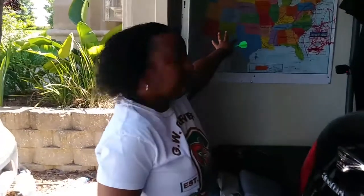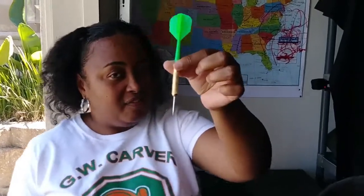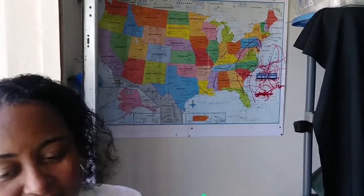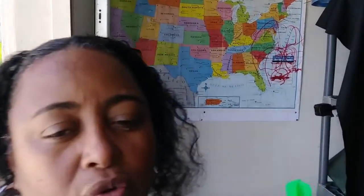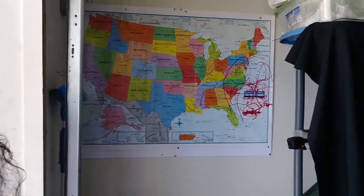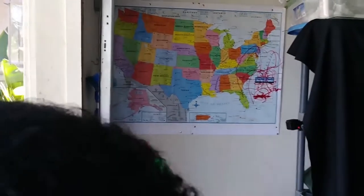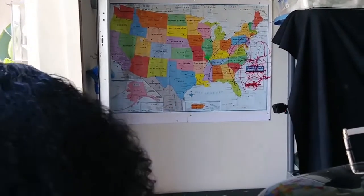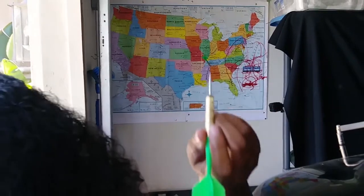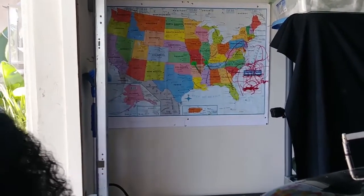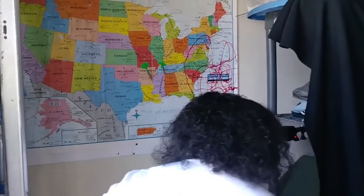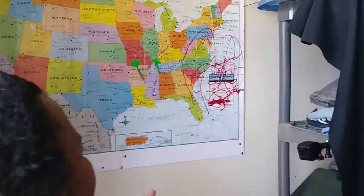Now we have the map and we have the darts — found some more of their friends. I'm going to pick two, Rich is going to throw three of them. Here it is — I'm going to throw it and wherever it lands, we might go there. Looks like Alabama and Arkansas — Alabama, Mississippi area. Might be heading to Alabama or Arkansas.